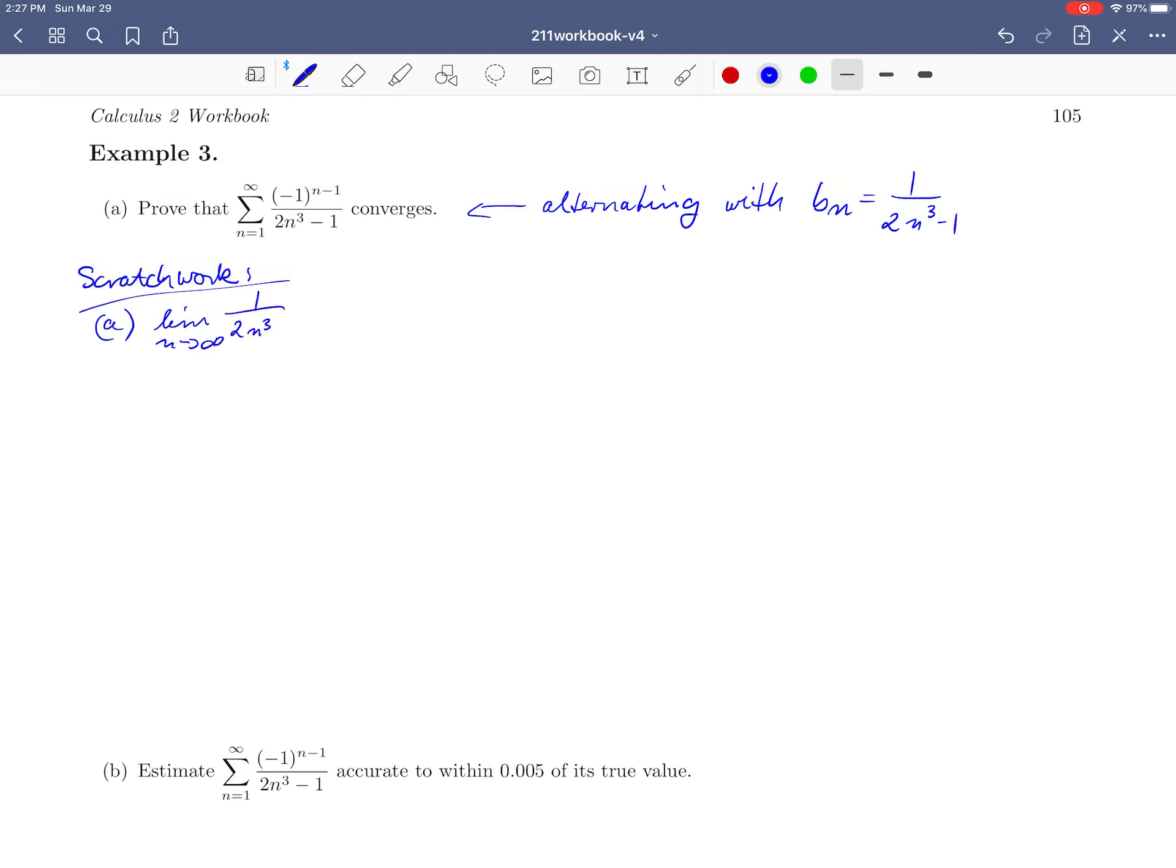To use the alternating series test, we again have to check our two conditions. We need to look at the limit as n goes to infinity of bn. And so we have the limit as n goes to infinity of 1 over 2n cubed minus 1. And yes, as n gets bigger and bigger, 2n cubed minus 1 gets bigger and bigger. And so 1 over this really large number is 0. So that's true. Check.